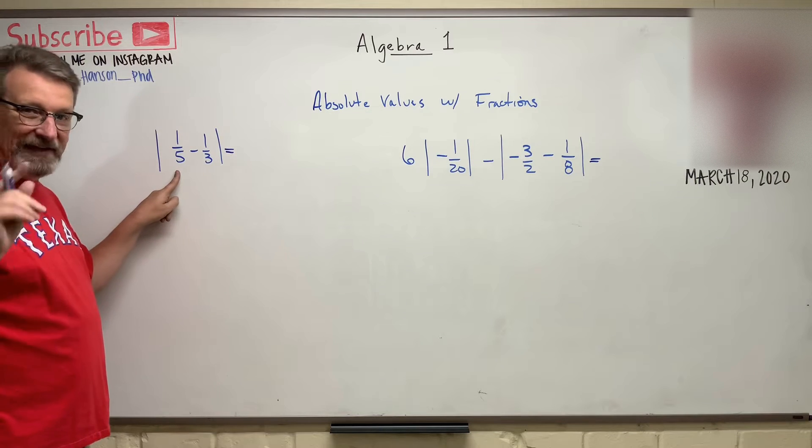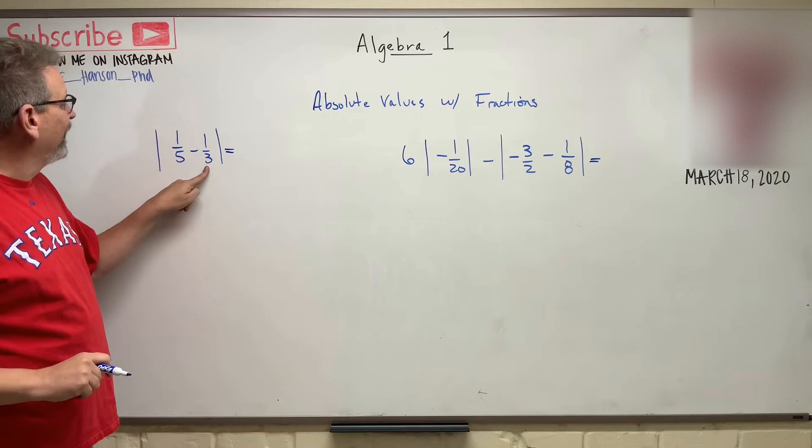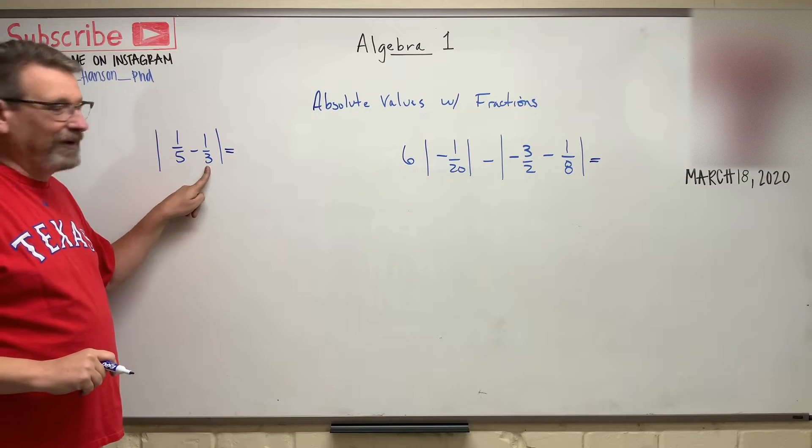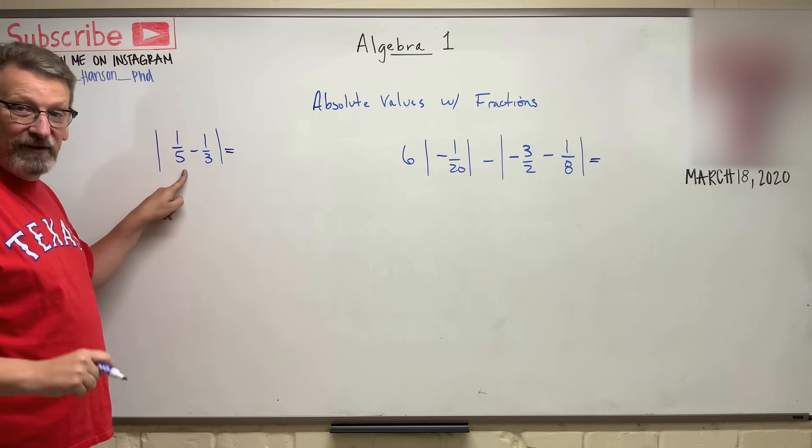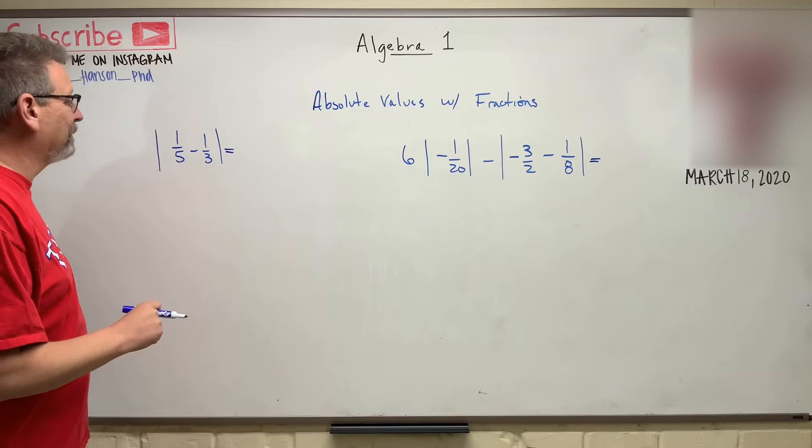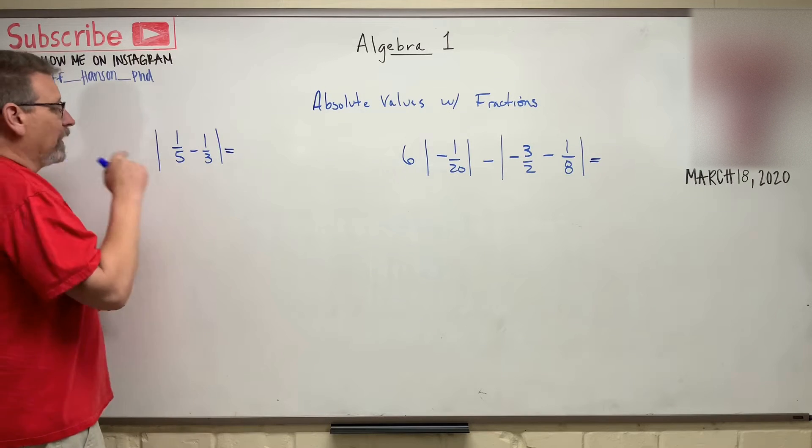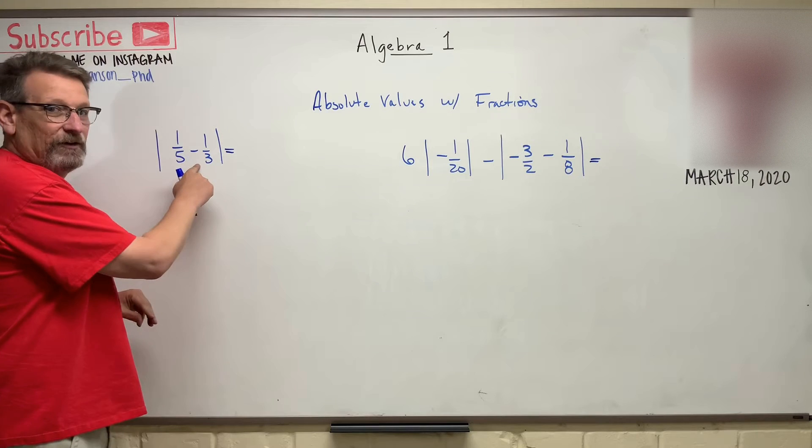What most people sadly think is, oh that's a big number minus a smaller number, so that's going to be positive. Except a third is actually bigger than a fifth, isn't it? We all know that because we're like math geniuses. To solve this first, we need to do what? Common denominator.